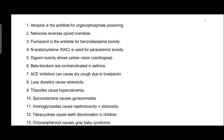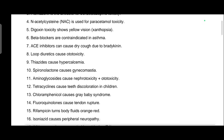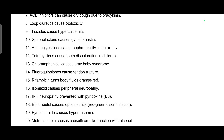Aminoglycosides cause nephrotoxicity plus ototoxicity. Tetracyclines cause teeth discoloration in children. Chloramphenicol causes gray baby syndrome. Fluoroquinolones cause tendon rupture. Rifampicin turns body fluids orange-red. Isoniazid (INH) causes peripheral neuropathy, prevented with pyridoxine. Ethambutol causes optic neuritis and loss of red-green discrimination. Pyrazinamide causes hyperuricemia.